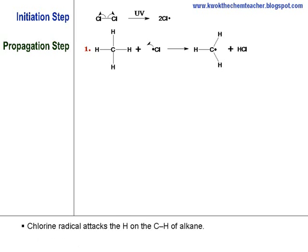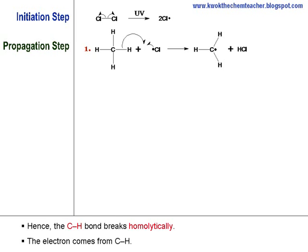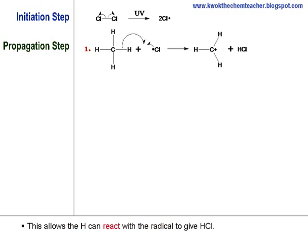This chlorine radical will attack the hydrogen on the C-H bond of alkane because it is the least-hindered atom. As a result, the C-H bond will break in a very homolytical fashion with the electron coming from the C-H bond directly. This will therefore allow the hydrogen to be reactive enough to react with the radical to give rise to the hydrogen chloride molecule.